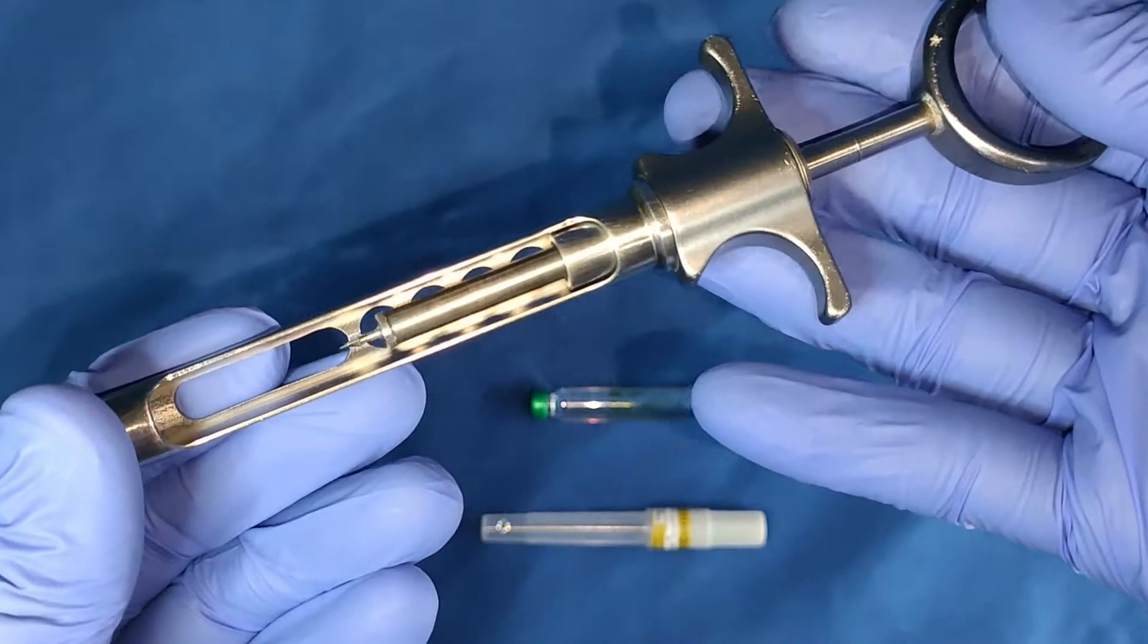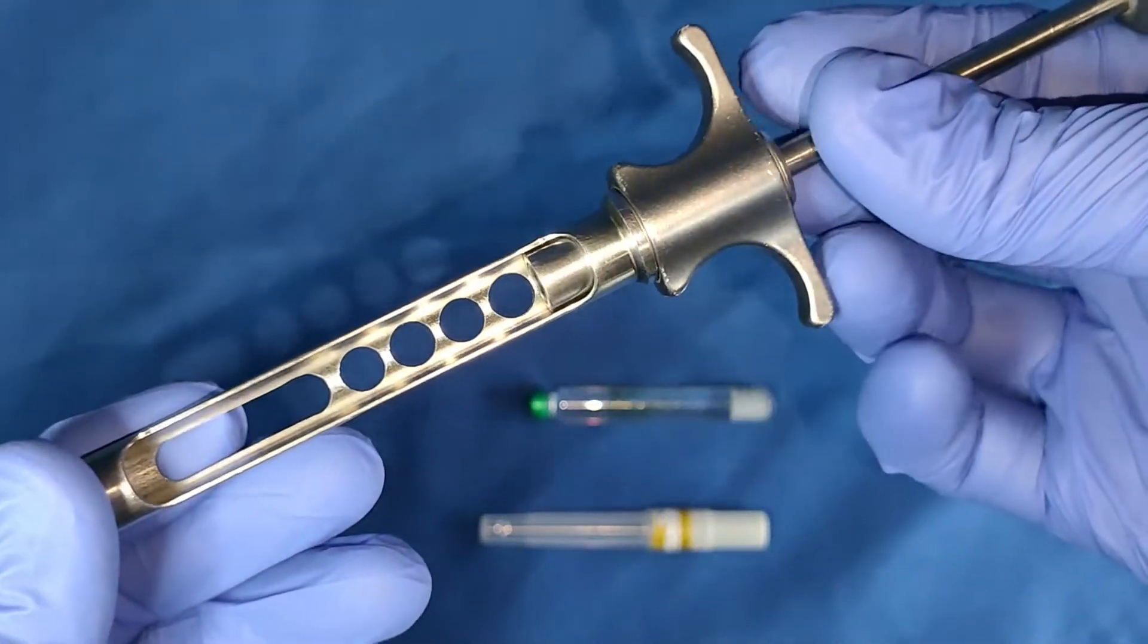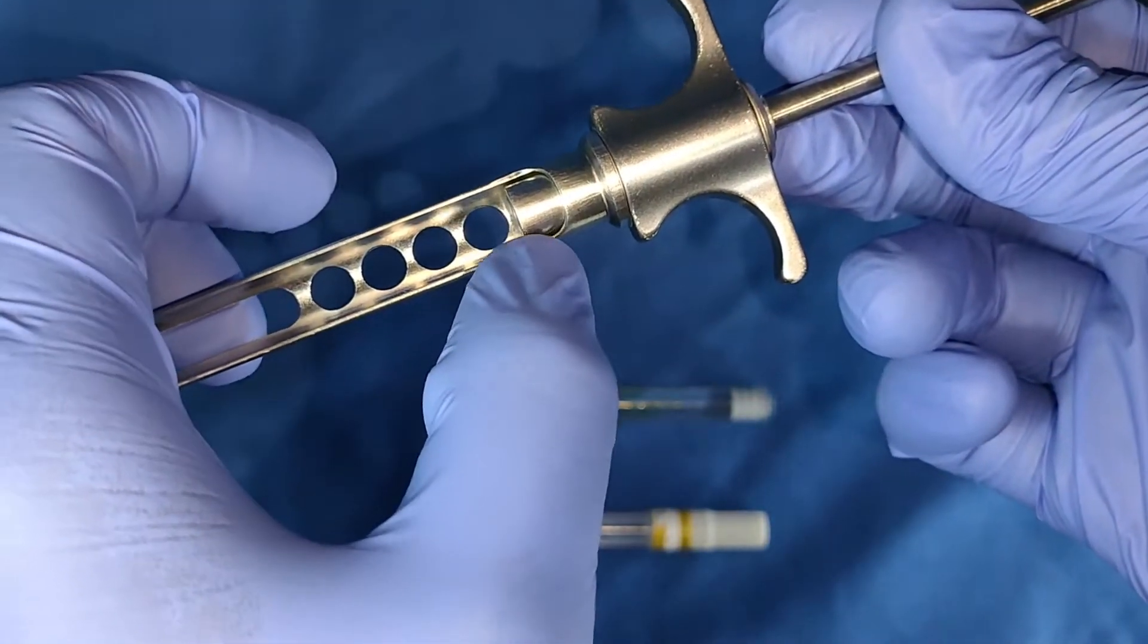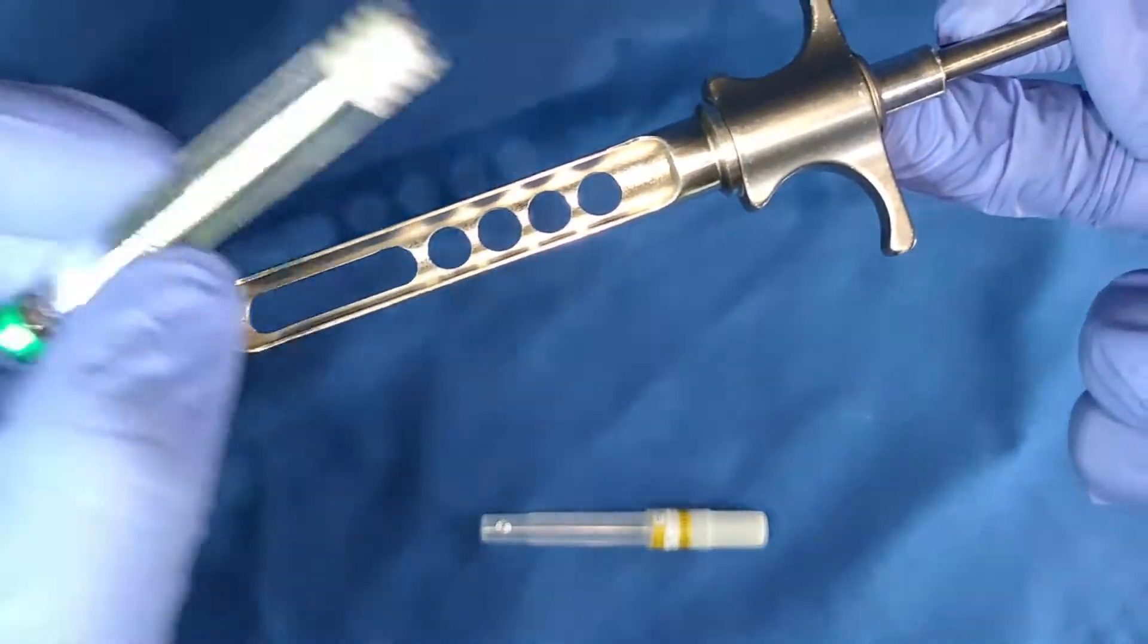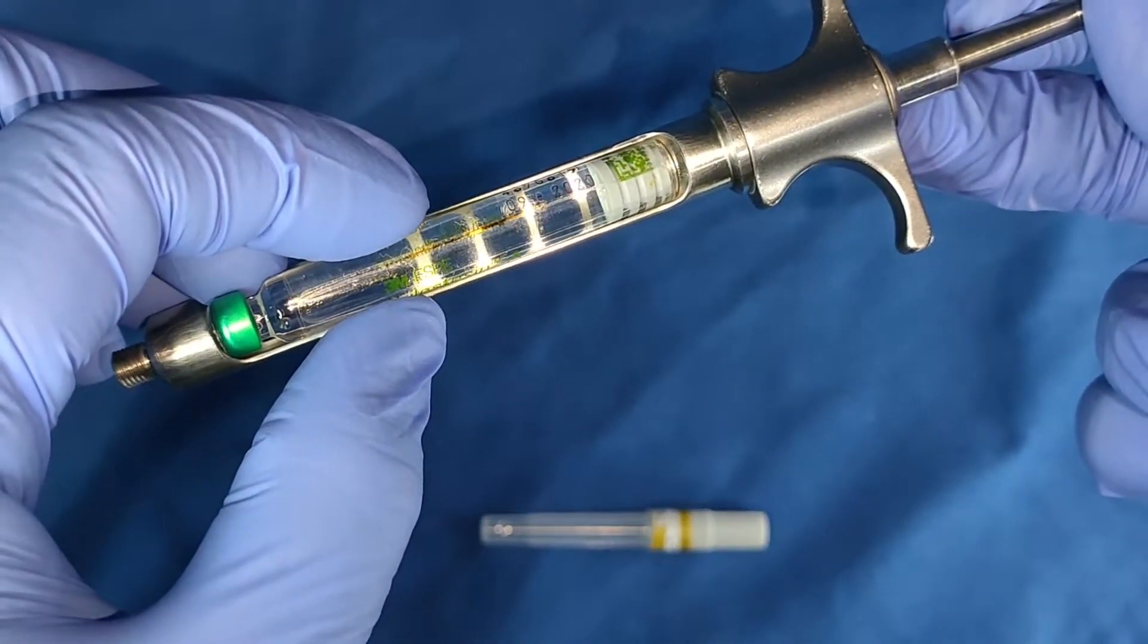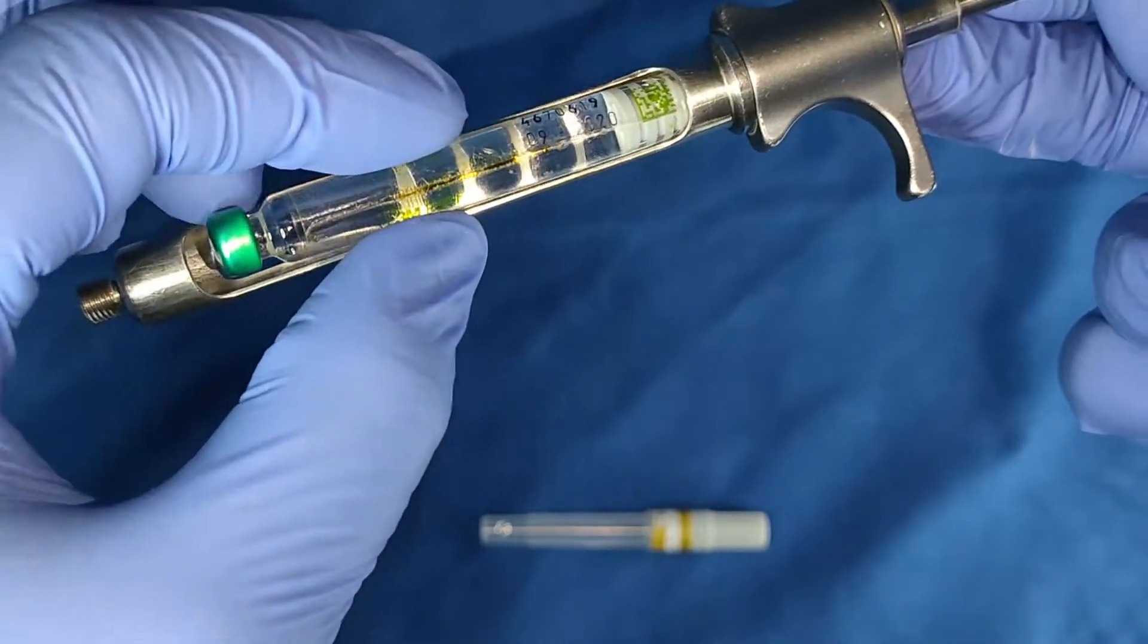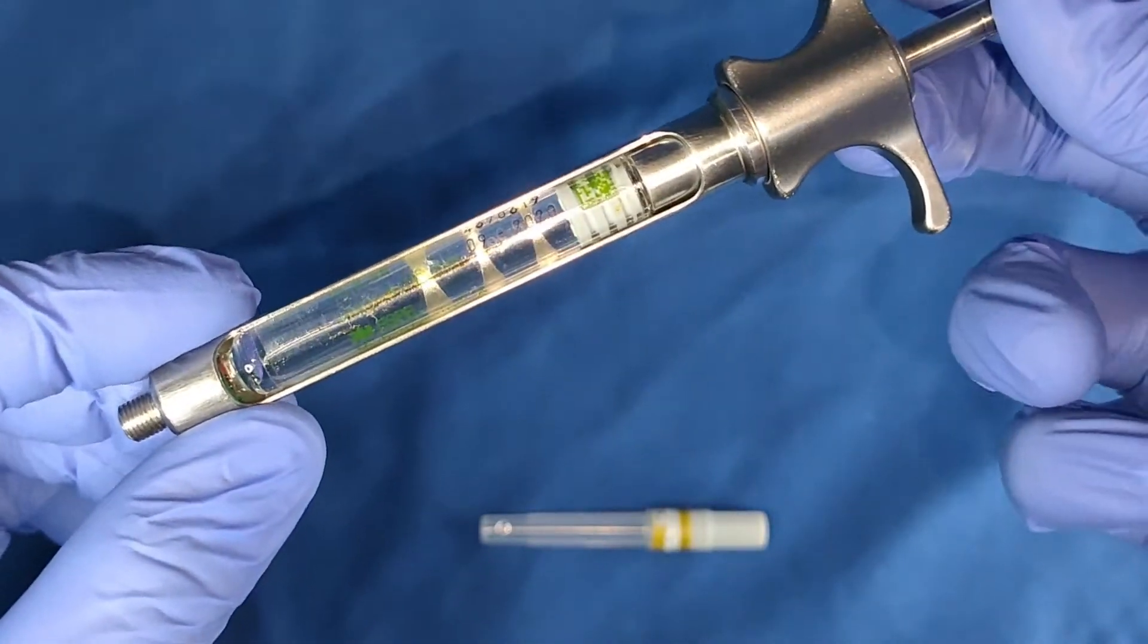First, pull the piston, this part, pull all the way. See, look at this part, pull all the way. And then place the rubber stopper first, not the other way around. This part first, and then release.